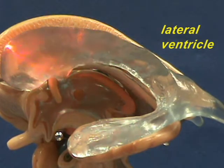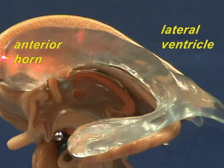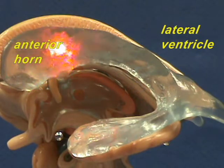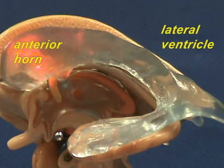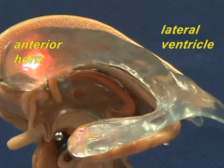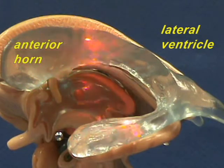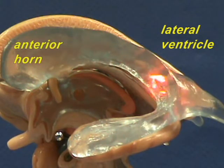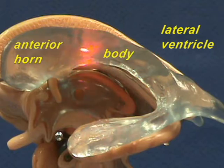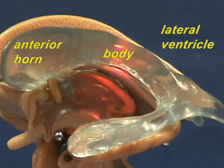This is the anterior horn right over here, the anterior horn of the lateral ventricle that extends into the frontal lobe of the cerebrum. Right over here is the body of the lateral ventricle.